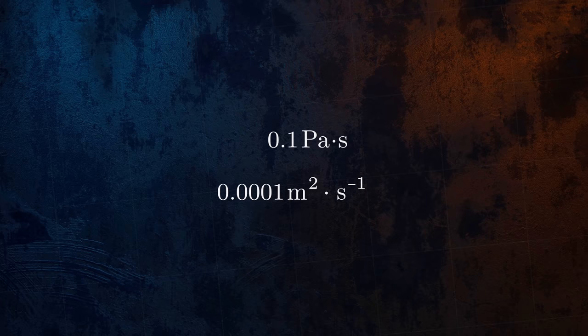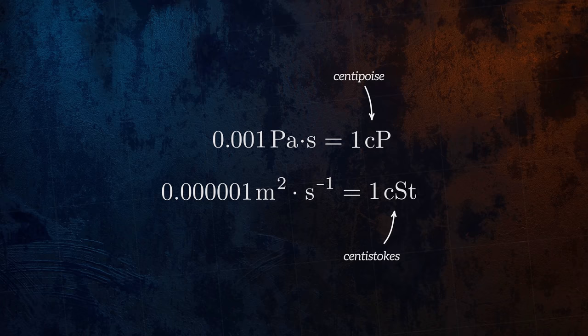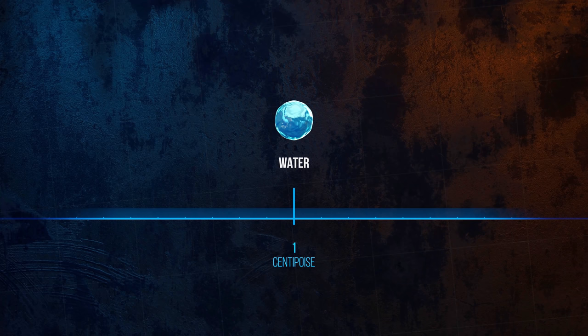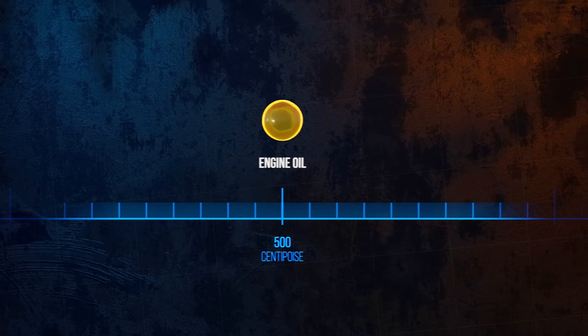The poise and stokes are other units for the dynamic and kinematic viscosities, although they are often expressed as centipoise and centistokes. The centipoise unit is particularly convenient because at room temperature, the viscosity of water is equal to 1 centipoise. Typical engine oil at room temperature has a viscosity of around 500 centipoise, so is 500 times more viscous than water. The viscosity of honey is 10,000 centipoise.